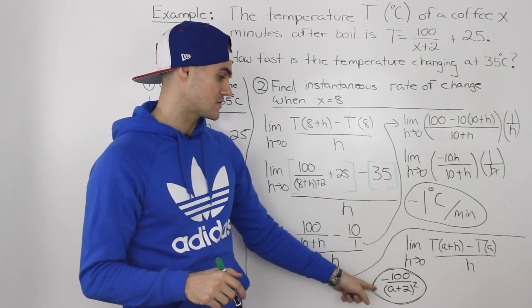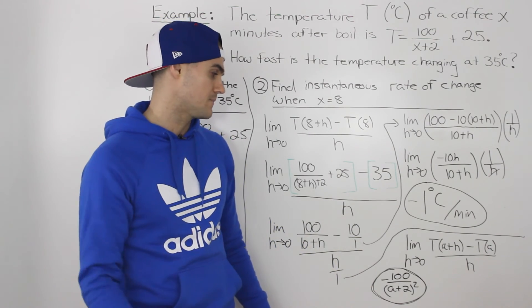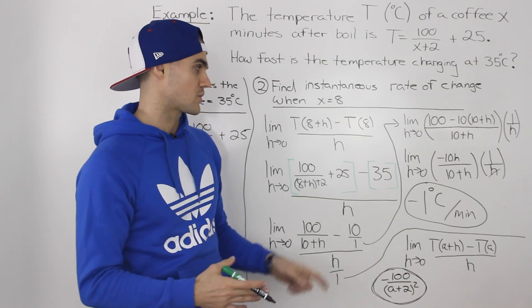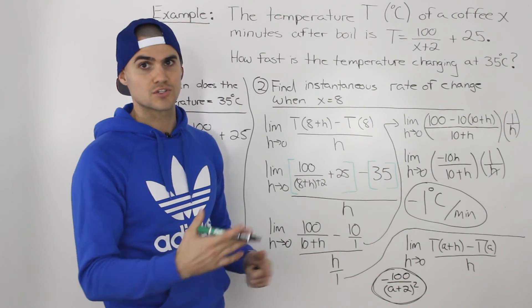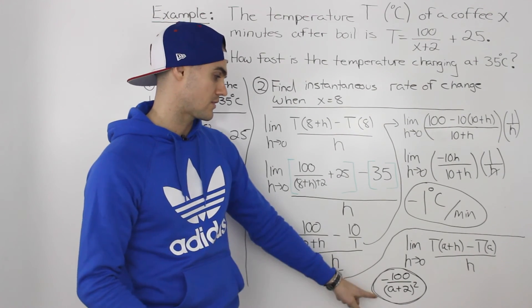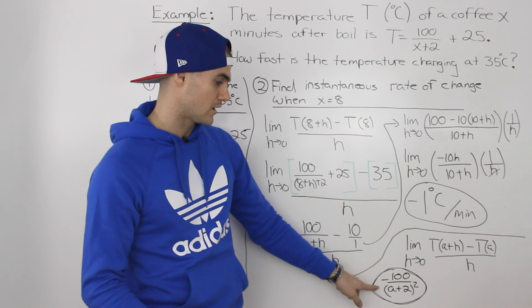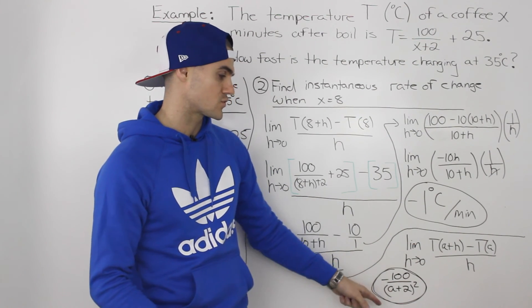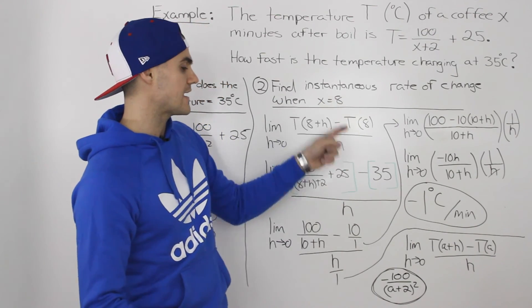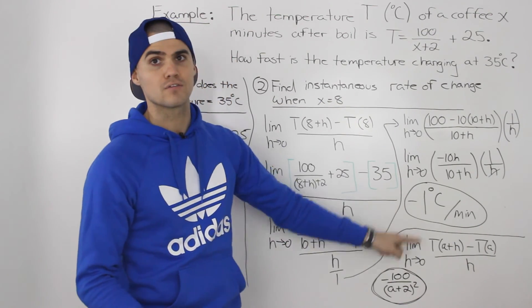And derivatives we're going to be covering in the next unit. And there are specific rules where we actually don't have to go through this. We can just do shortcuts. But we'll get there. But yeah, go through the algebra for this and make sure you get this negative 100 over a plus 2 squared. And then when you plug in 8 for a, you would get negative 1.